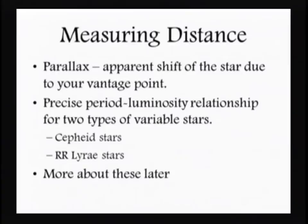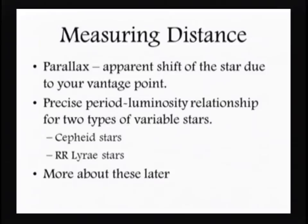If we talk about a precise period-luminosity relationship, that comes from what's going on within the star itself. There are two kinds of variable stars: Cepheid variable stars and RR Lyra stars. These work well because they have very precise period-luminosity relationships. Luminosity is energy per unit time — power. If we can measure the period of change within that star, we know exactly what the brightness is, and from brightness we can determine the relationship between distance and how much material that starlight passes through.